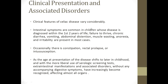Failure to thrive, chronic diarrhea, vomiting, abdominal distension, muscle wasting, anorexia, and irritability are present in most cases — these are the typical features described in celiac disease patients. Occasionally there is constipation, rectal prolapse, or intussusception. As the age of presentation shifts to later childhood and with more liberal use of serological screening tests, extra-intestinal manifestations and associated disorders without any accompanying digestive symptoms have increasingly become recognized, affecting almost all organs.